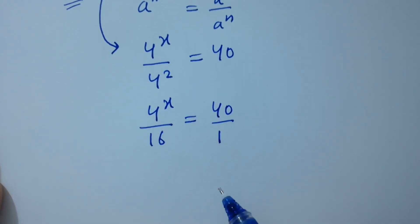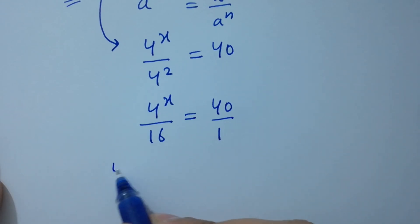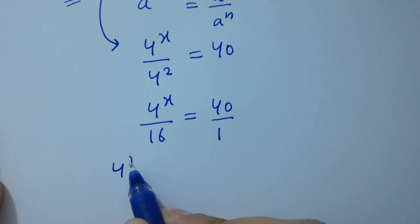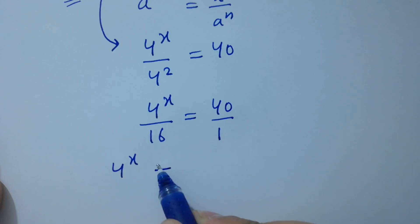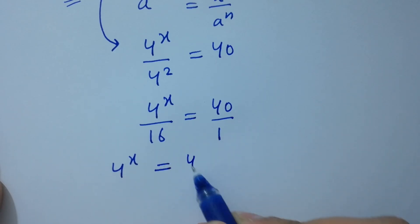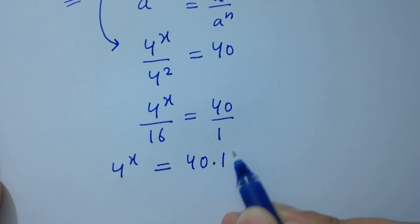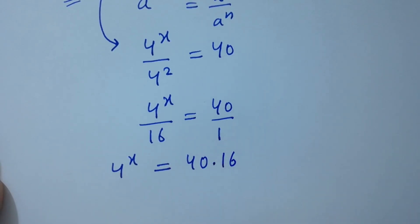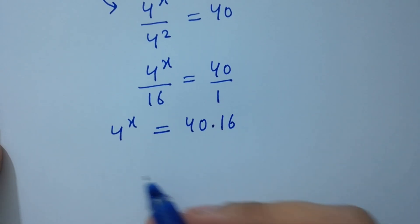By cross multiplication, we have 4 to the power x times 1, so 4 to the power x equals 40 times 16, which gives 4 to the power x equals 640. Now take log on both sides.